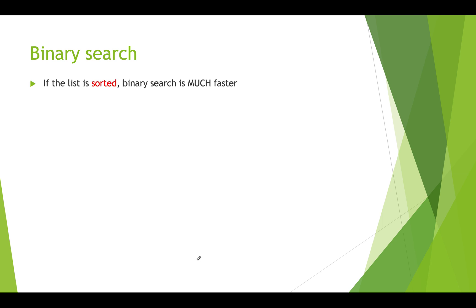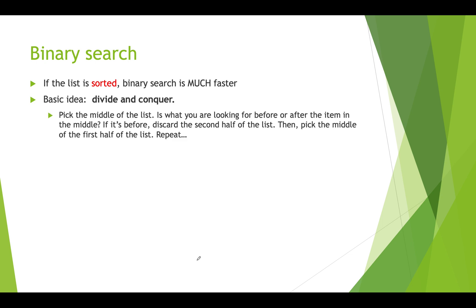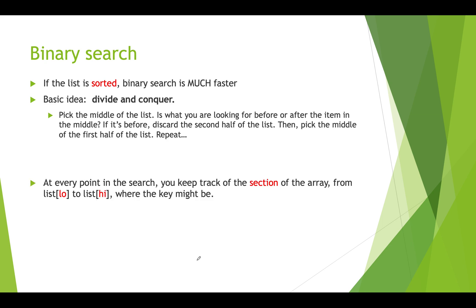If we have a sorted list, binary search is much faster. The idea is divide and conquer — we split the list in half, look at the midpoint, and see if it matches what we're looking for. If not, we go to the left side or the right side depending on whether the midpoint is bigger or smaller than what we're looking for. We keep doing this until we find the item or have nothing left to look through. We keep track of sections of the array using a low and high index. Initially, low is zero and high is size minus one.